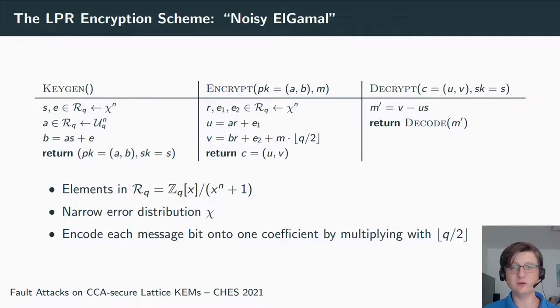To explain how this attack works, I have to give a brief introduction to LPR. This LPR encryption scheme—I always like to describe it as a noisy ElGamal scheme. It works with elements in a polynomial ring Rq, where all coefficients are taken modulo some q. q can be a prime but doesn't have to be a prime number. Key generation works as follows: first, two polynomials s and e are sampled, where all coefficients follow a narrow error distribution χ.